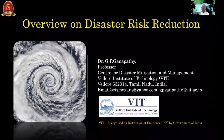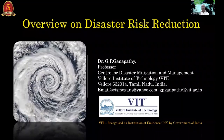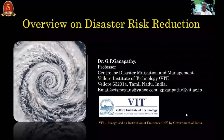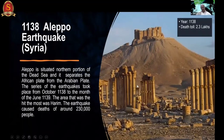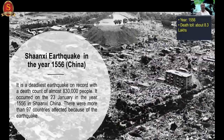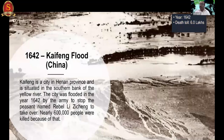Disaster is not new to us. The 1138 Aleppo earthquake in Syria killed around 2.3 lakh people. The Shaanxi earthquake of 1556 in China killed around 8 lakh 30,000 people, affecting more than 97 countries. The 1642 Kaifeng flood in China had a death toll of 6 lakh people.